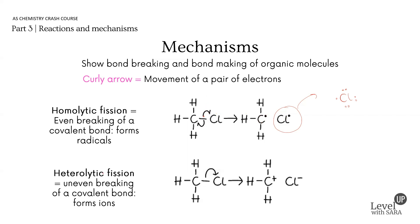Heterolytic fission is the uneven breaking of a covalent bond, and it causes the formation of ions. In terms of electron movement, a covalent bond is made of two electrons — one dot and one cross — one from the chlorine and one from the carbon. Let's do a dot-and-cross diagram: the carbon has the crosses, and the chlorine has the dots.